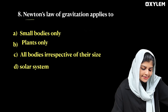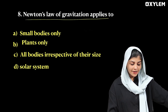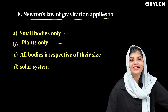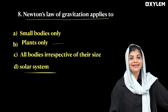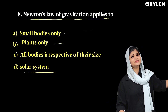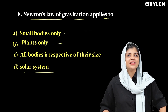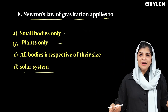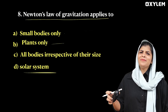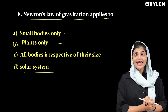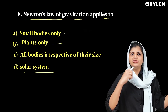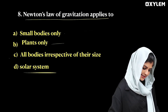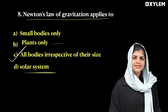Next question: Newton's law of gravitation applies to — small bodies only, planets only, all bodies irrespective of their size, or solar system only? Every object in the universe attracts every other object — this bottle, this mouse, all objects, irrespective of their size. So the answer is: all bodies irrespective of their size.